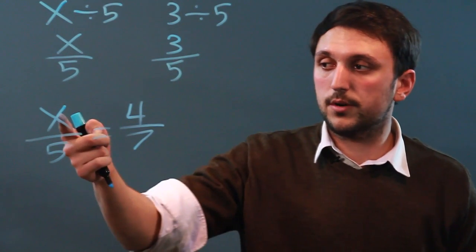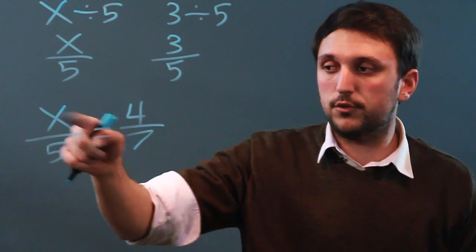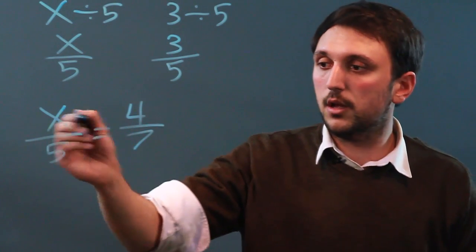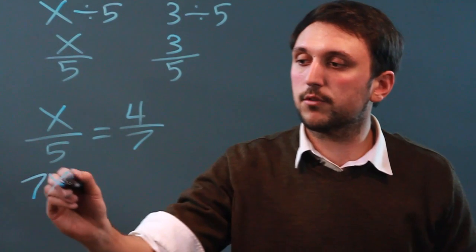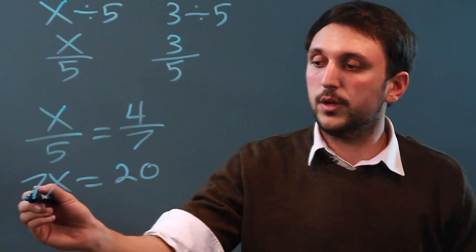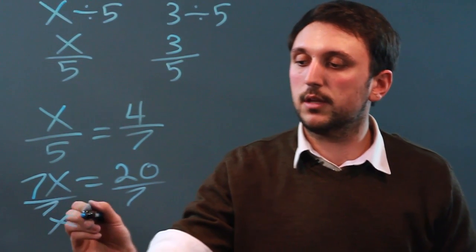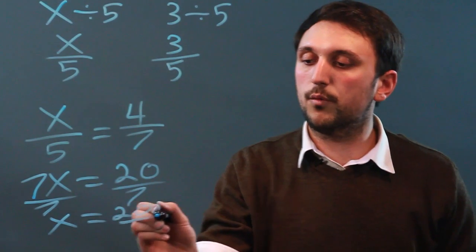So the numerator here multiplies with the denominator here because when we have an equal sign and two fractions, we cross multiply. So we have 7x equals 4 times 5, which is 20. We divide by 7, and we get x equals 20 over 7.